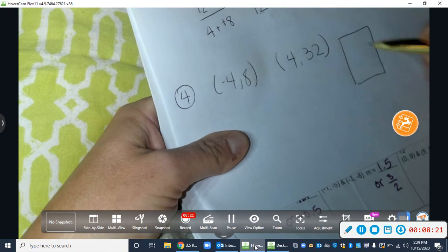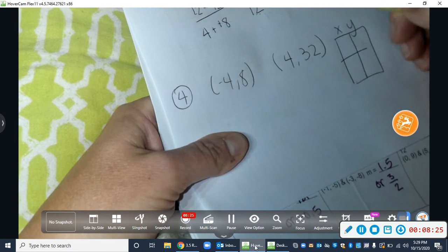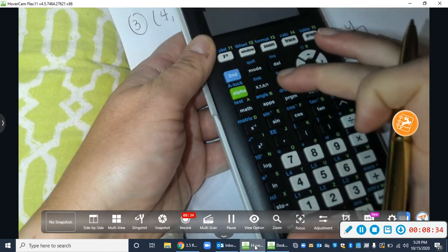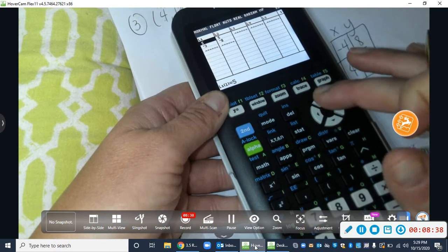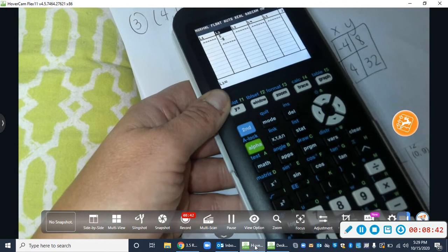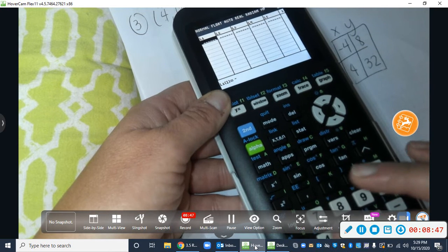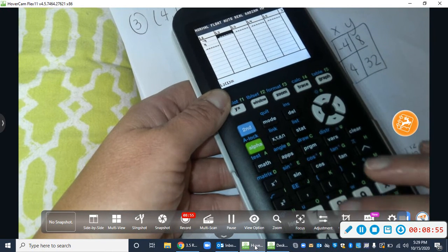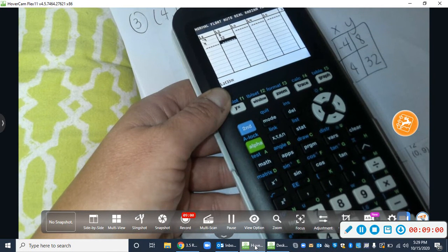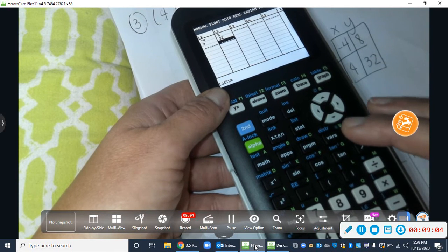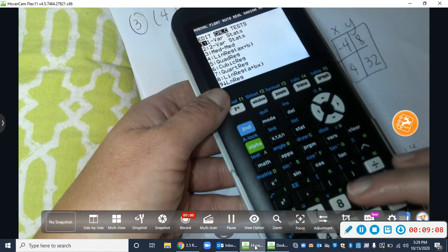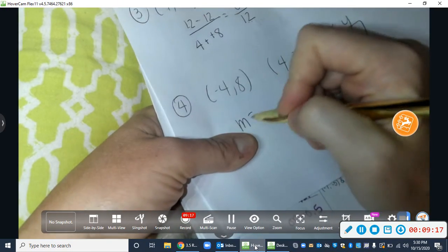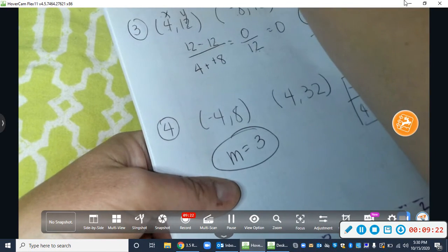We'll do this last one with the calculator method. x, y. Let's go ahead and put those in. Negative 4 and 8. 4 and 32. So stat, 1, clear, clear. I've got my x's, which are negative 4 and 4, and my y's are 8 and 32. Then we're going to go stat, calc, 4, enter, enter, enter, enter, enter. So that tells me right there that my a, which is my m, is 3. So that's how we do that first page.